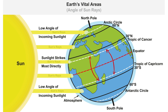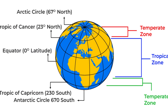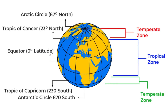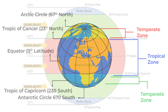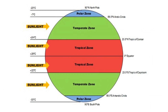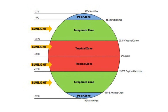This belt is called the tropics or tropical belt. The areas beyond 23.5 degrees north or south are called the subtropical belt or temperate latitudes. Areas beyond 66.5 degrees north or south are called polar zones. Maximum heating of earth takes place between 23.5 degrees north and 23.5 degrees south.